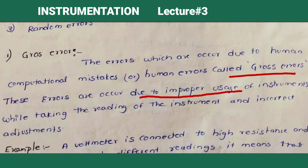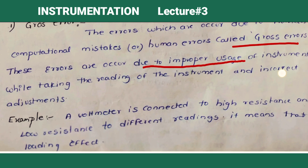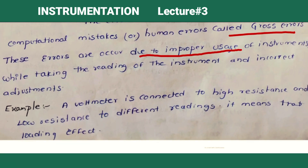For example, consider a voltmeter. If a voltmeter is connected to high resistance and low resistance, different readings will result — a loading effect will occur. A voltmeter must be made with high resistance because it is connected across the terminals. If the voltmeter is designed with low resistance, then a loading effect will come.